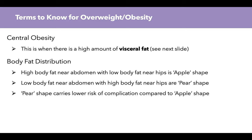Some terms to know for overweight and obesity: central obesity is when there is a high amount of visceral fat — fat that is packed in among your internal organs. Another term is body fat distribution. When there's high body fat near the abdomen with low body fat near the hips, this is called the apple shape. When there's low body fat near the abdomen with high body fat near the hips, we have the pear shape. The pear shape carries a lower risk of complications like heart disease, type 2 diabetes, and hypertension compared to the apple shape.